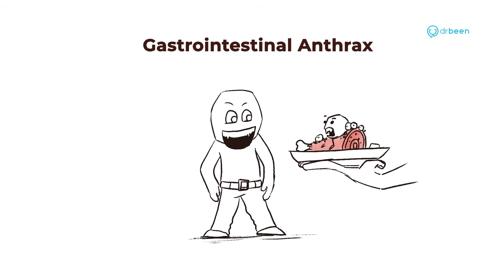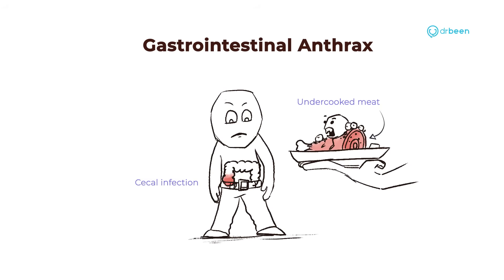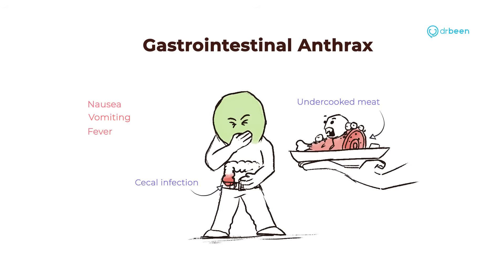Gastrointestinal anthrax is observed in patients who have ingested contaminated or undercooked meat. The cecal infection causes nausea, vomiting, fever, and anorexia. Two to three days after onset, severe abdominal pain and anorexia will occur. Toxemia leading to death can occur soon after.